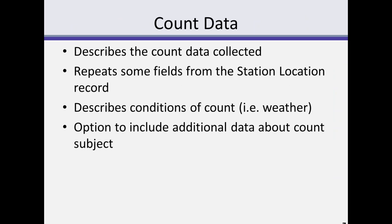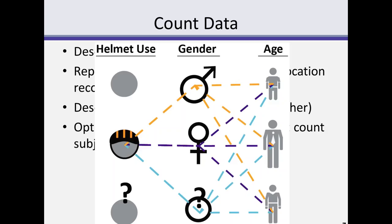The second element is the count data itself — the numerical counts recorded. It also repeats some fields from the station location record and provides additional information such as weather during the day the count was collected. In the recent update to the TMG, there's now an option to include additional data about the count subject: whether helmet use, gender, and age are recorded. This is described in detail in the guidance document, along with a graphic showing the many different possible combinations — for example, counting both helmet use and gender for users wearing a helmet would allow recording male, female, and other combinations.